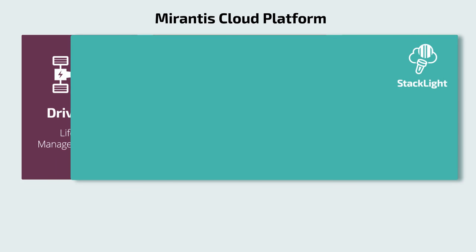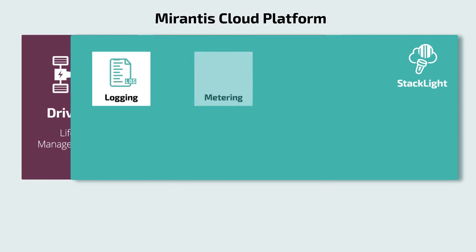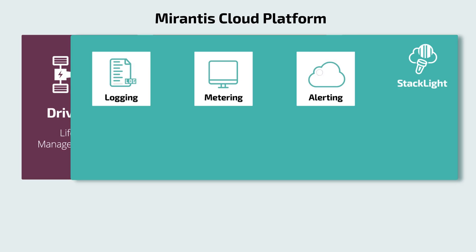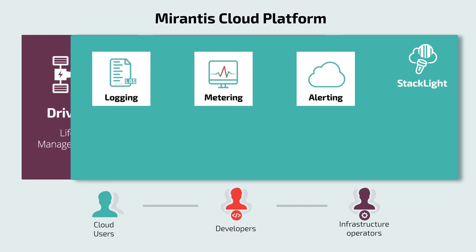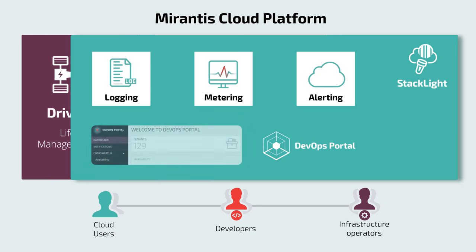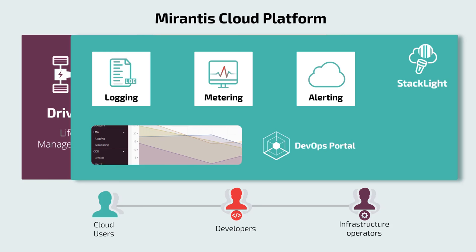MCP includes pre-integrated StackLight — a logging, metering, and alerting toolchain equipped with graphical web UIs to speed up break-fix, bottleneck elimination, and performance tuning. Designed to bridge communication gaps separating cloud users, developers, and infrastructure operators, StackLight also includes a DevOps portal: an evolving Mirantis operations dashboard providing status alerts and offering access to a host of Mirantis-provided operations tooling.